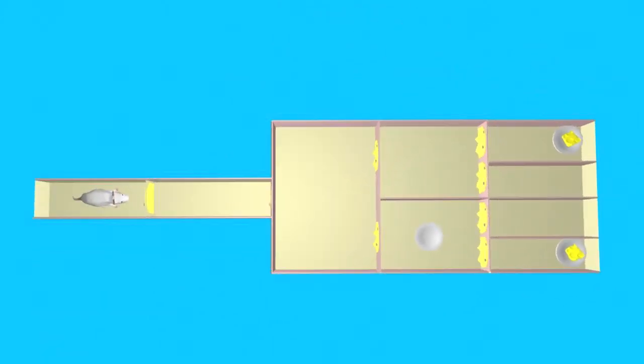Now, after the first mouse is removed, the second mouse is let into the box. It goes through the same procedure.